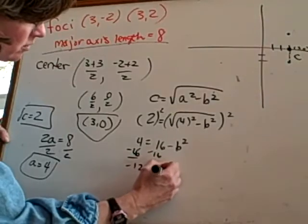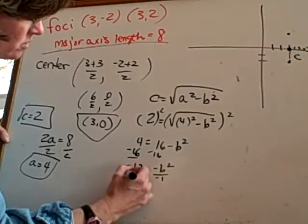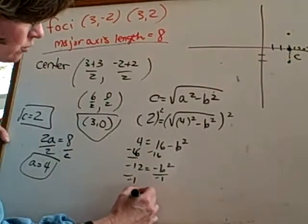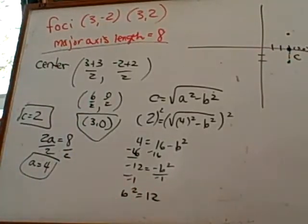We'll take 16 from both sides. It's not pretty but it works. Negative 12 equals negative B squared. Divide both sides by negative 1. B squared equals 12. Now in the formula I actually use B squared. So I don't need to find the square root of B squared. Just leaving it as B squared is fine.